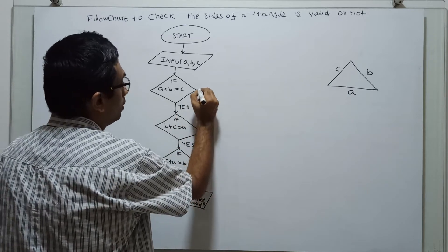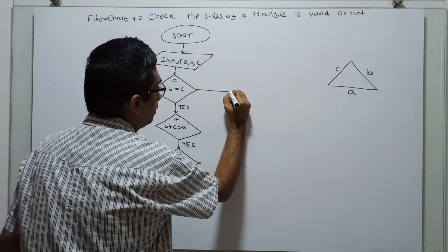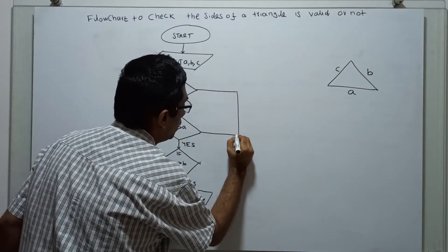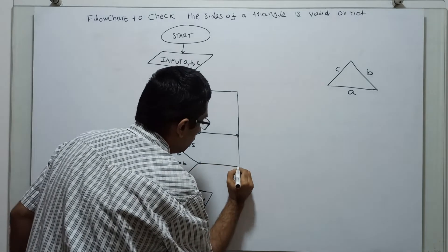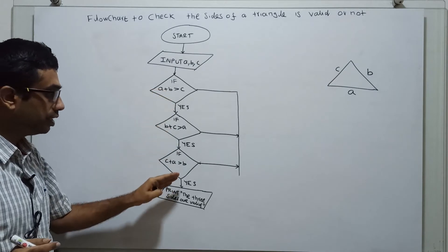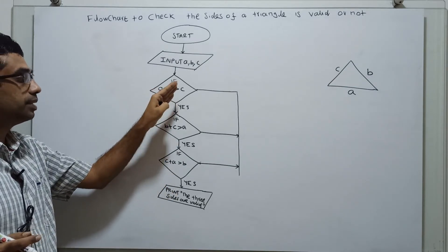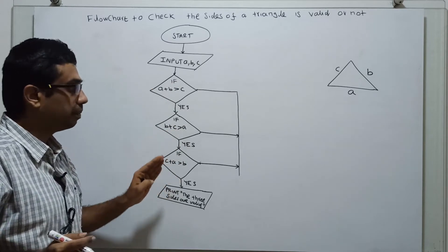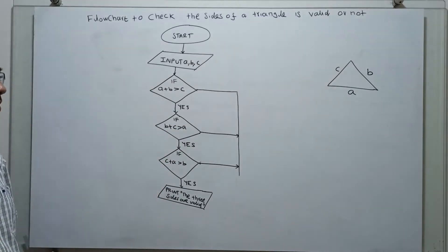This no means, for example, having a no flow here. So we have to understand, if the three sides form a triangle, then all the three conditions must be satisfied. That means A plus B greater than C and B plus C greater than A, C plus A greater than B. If any one of the conditions is false, then we can print that the sides are invalid.